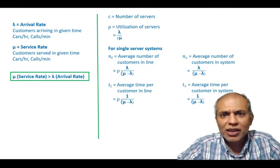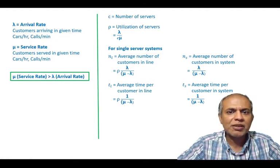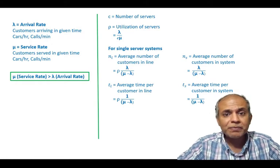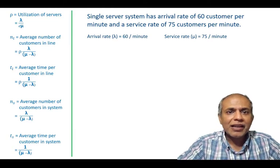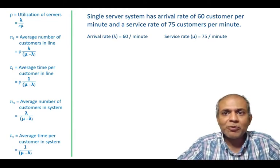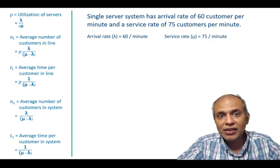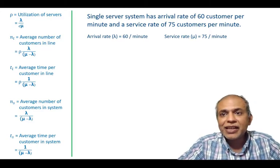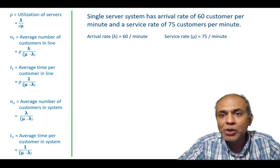But having these formulas with us we can try a very simple problem to see what these numbers would mean. So let's assume, I've just put all the formulas back here again, we have a single server system with the rate of arrival as 60 customers per minute, which we put as lambda, and the service rate is 75 customers per minute which we identify or label as mu.